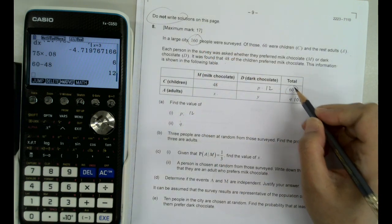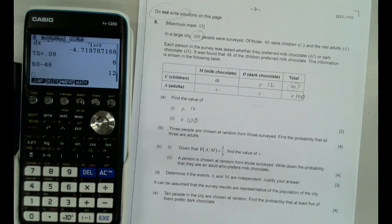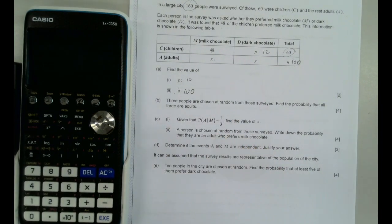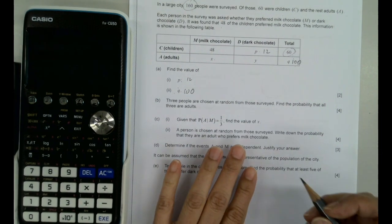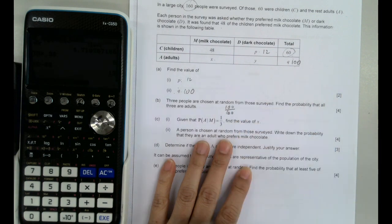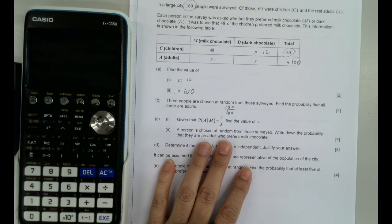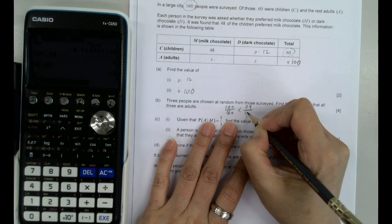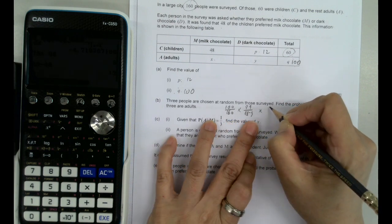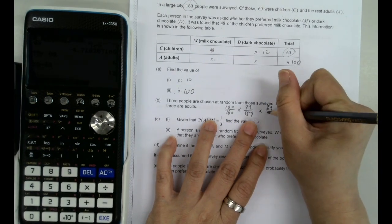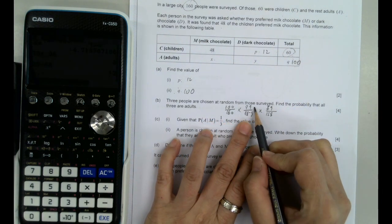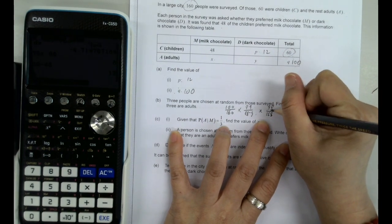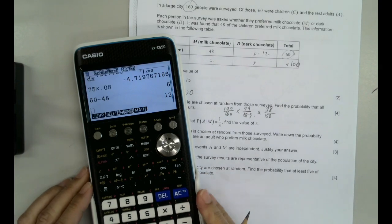So 160 people, 60 is children with P, 100 should be Q. Then we move on. The people are chosen at random from the survey. The probability of three of them are adults. So we want to have adults to be 100 over 160. And then the second one is only 99 adults left.